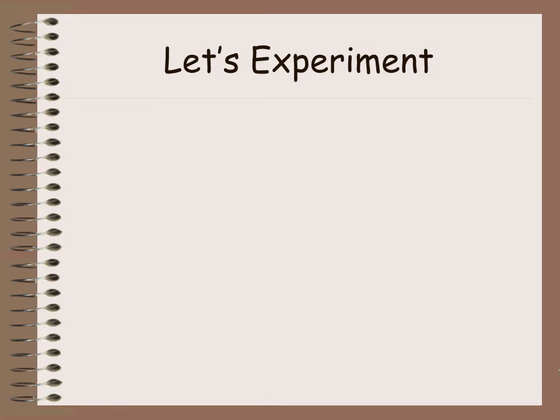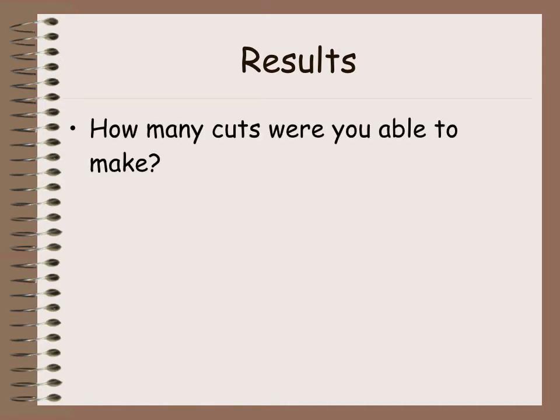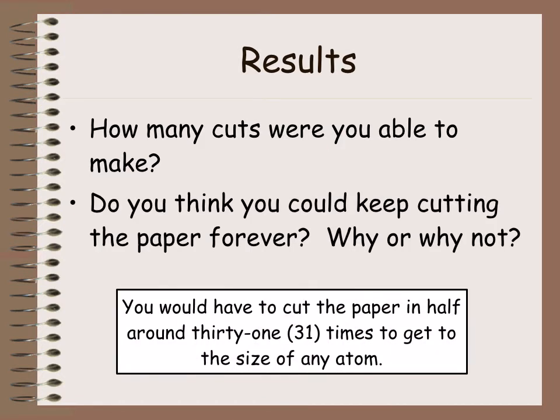So, in class, if you saw this lecture, we've done this experiment in our groups. If you are at home, go ahead and complete this activity. Cut a piece of paper in half, and then with each half, keep cutting it in half as much as you can. Go ahead and cut it as many times as you can. So pause this video, do the activity, then we'll go to the results. I don't know for those of you at home how many cuts you were able to make, but in order to cut the paper forever, in order to make it into an atom, you would have to cut that piece of paper in half 31 times, which, if you noticed, was impossible in our classroom setting.